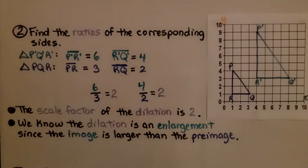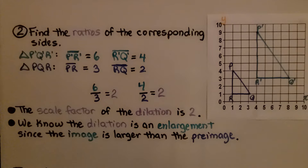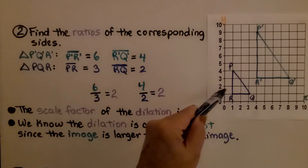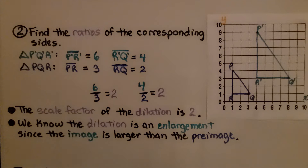We know the dilation is an enlargement since the image is larger than the preimage. The angles are congruent for the preimage and the image — not the side lengths. Remember, it got larger, so the side lengths are not congruent, but the angles are. The triangles are similar.